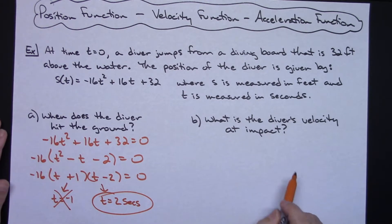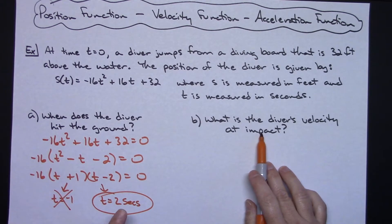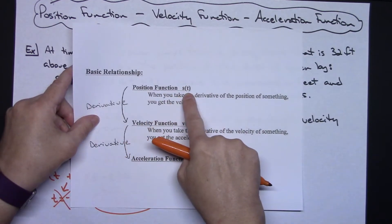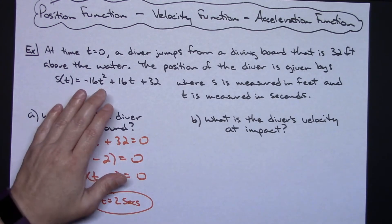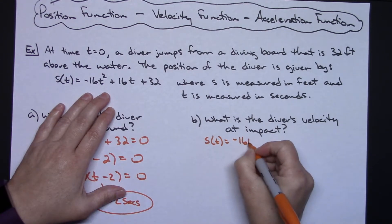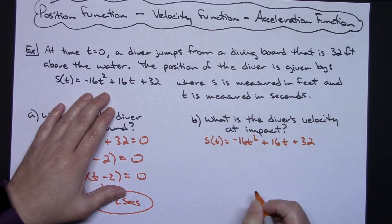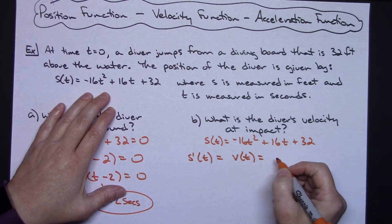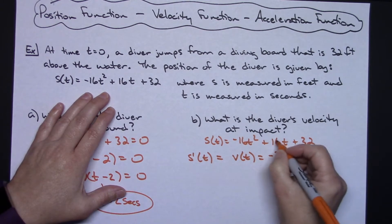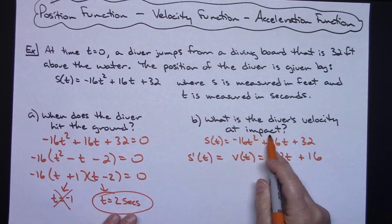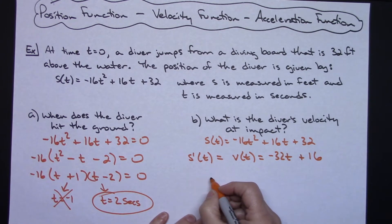No calculus was needed for that part. Now for what is the diver's velocity at impact: we know impact occurs 2 seconds after the jump, and this is the position function. Recalling that if you take the derivative of the position function you get the velocity function — that's the first thing we need to do. So s of t equals negative 16t squared plus 16t plus 32. Taking the derivative gives v of t equals negative 32t plus 16. Now I plug in t equals 2.